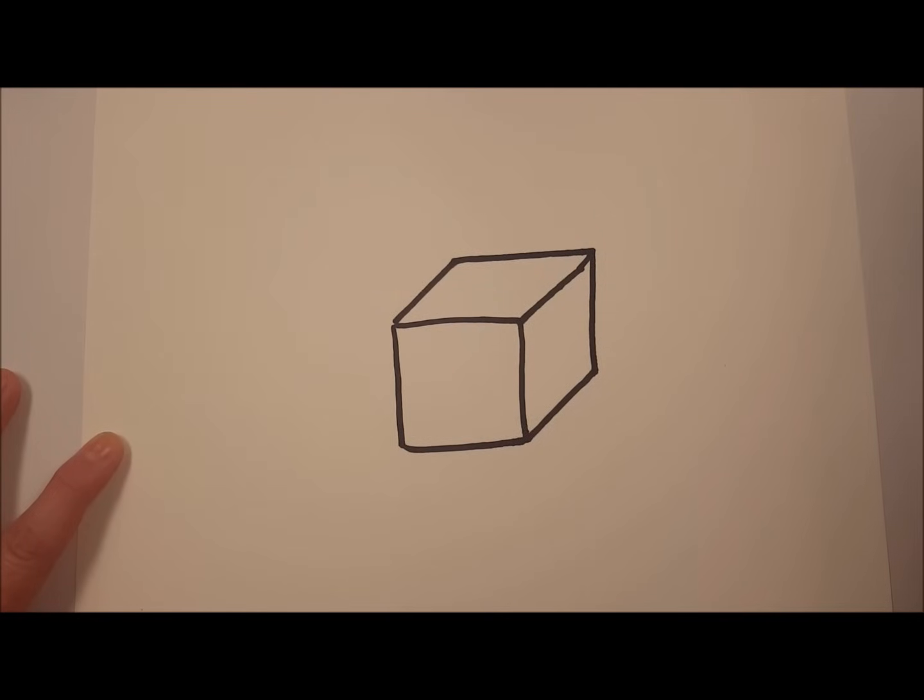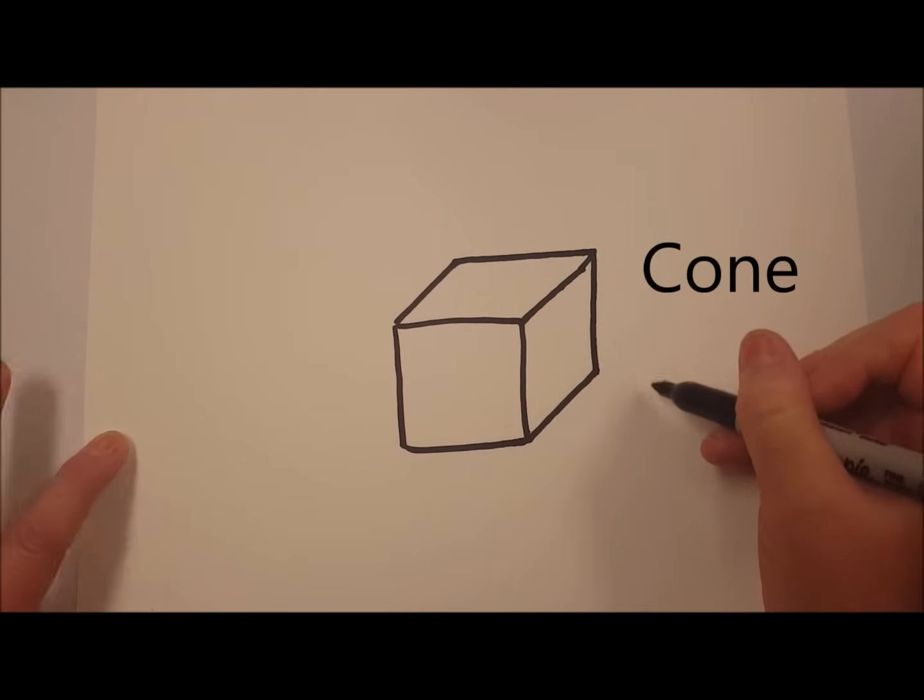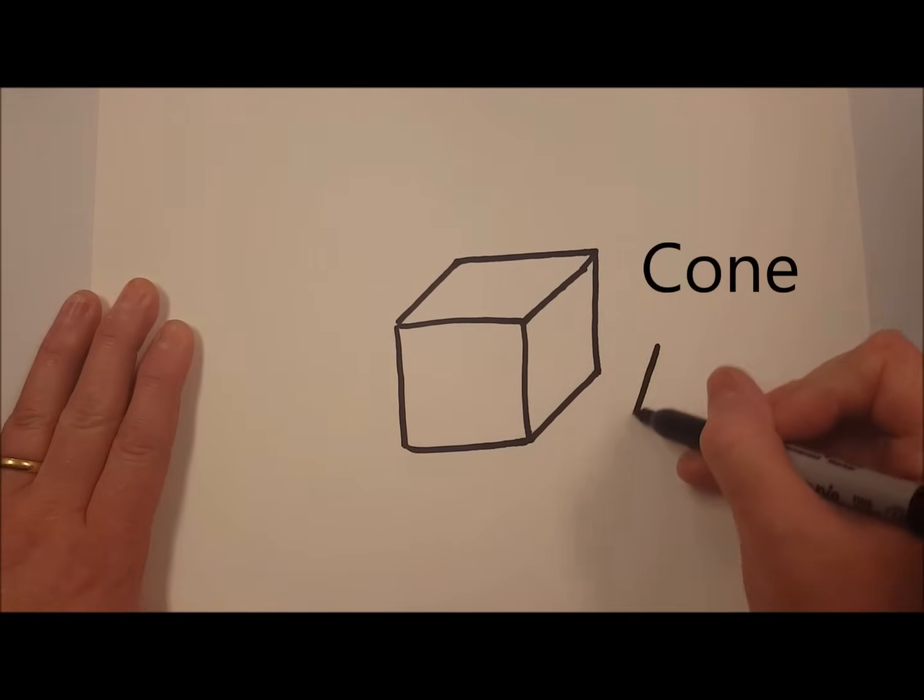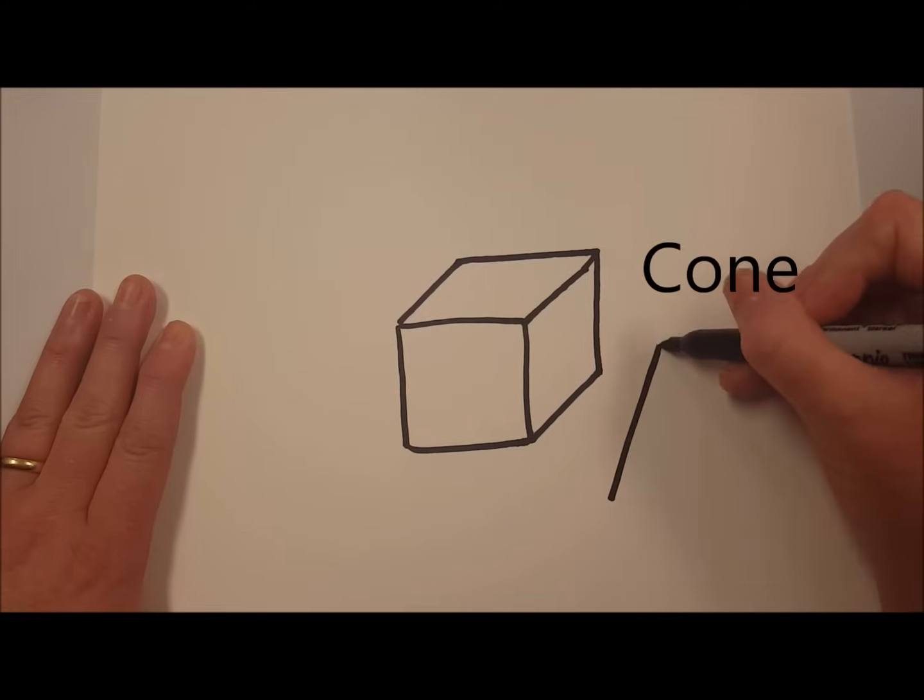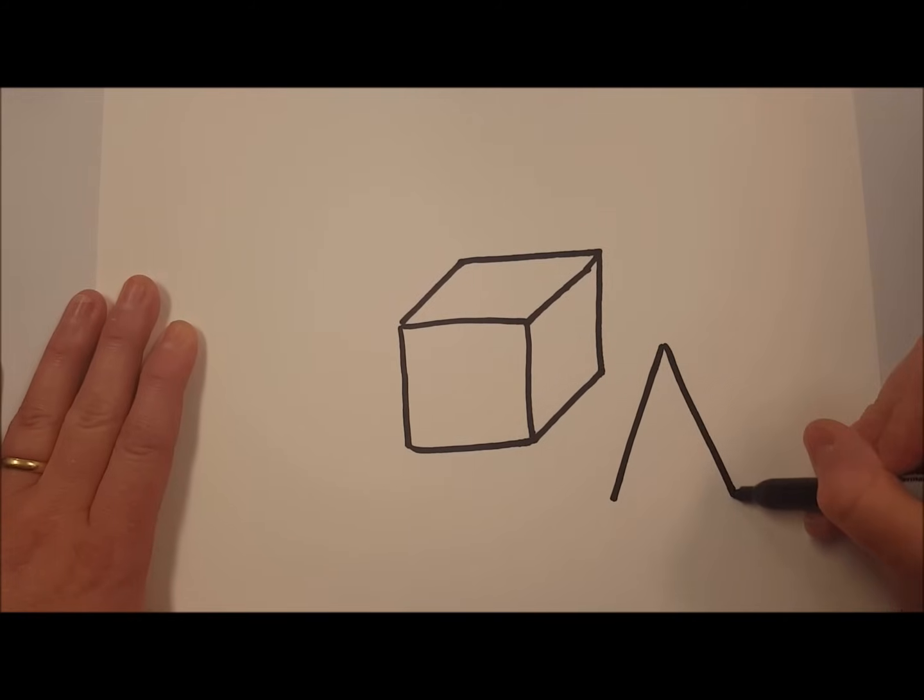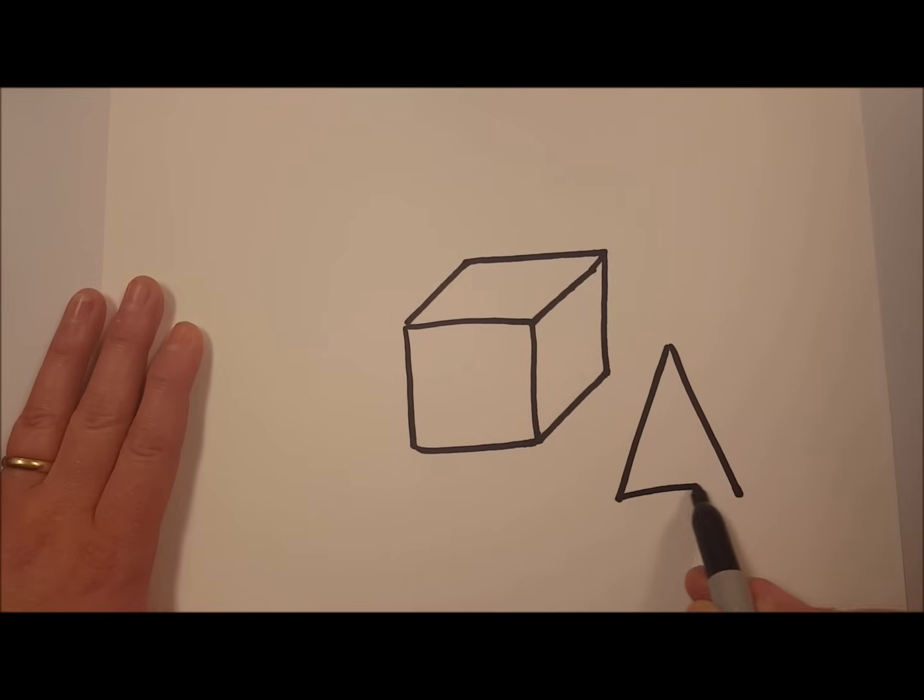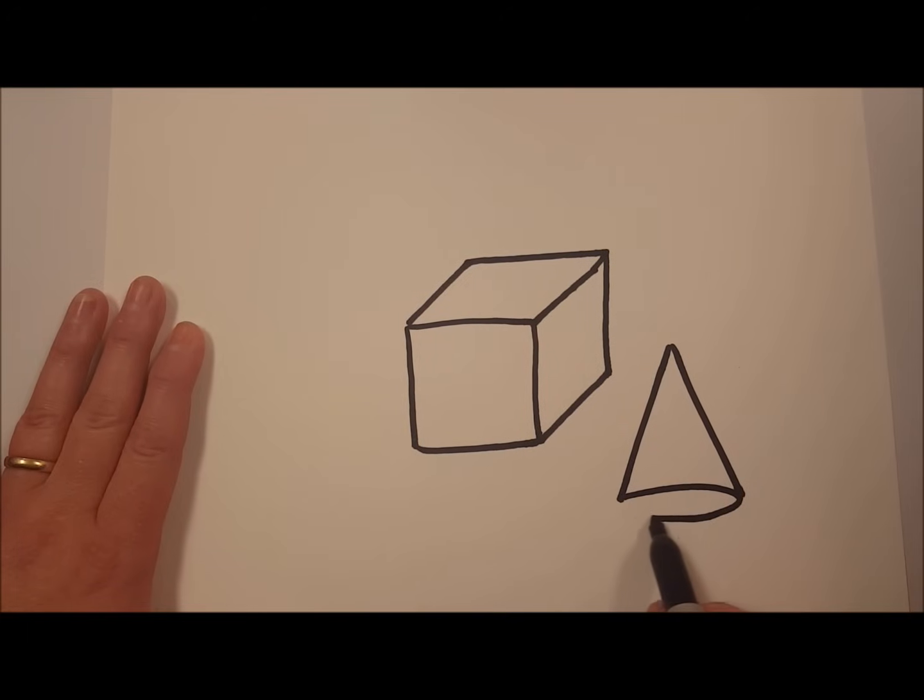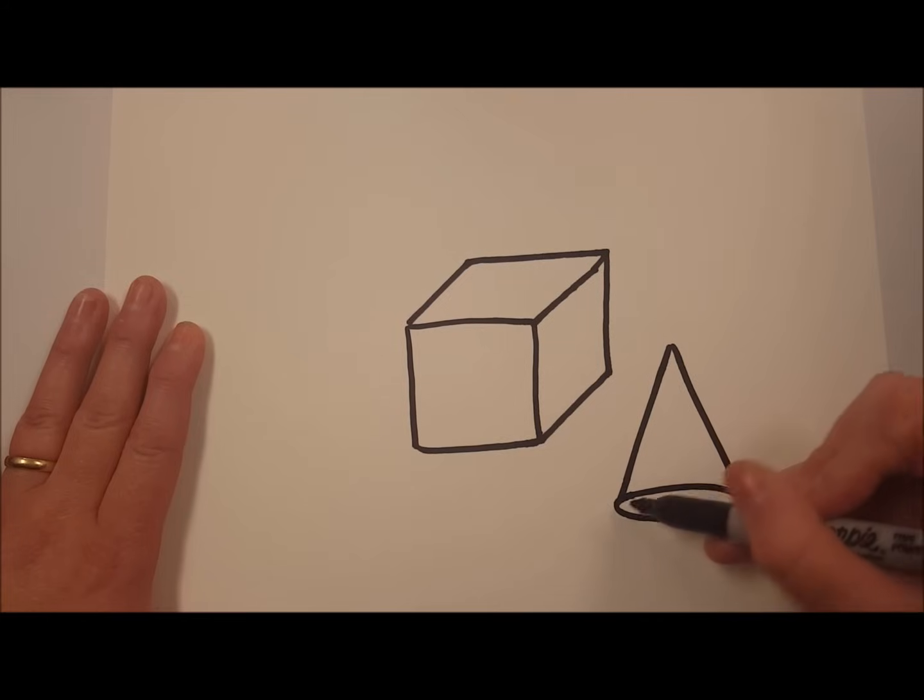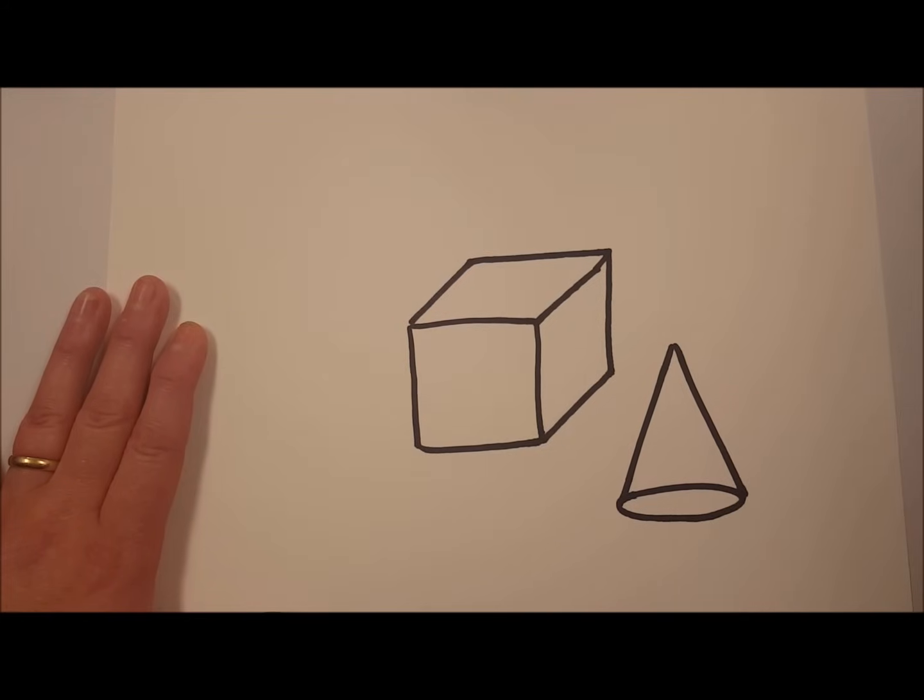Next, let's do a cone. A cone is a triangle that's rounded at the bottom, so we start with a triangle shape, which is a plane shape or a flat two-dimensional shape. And to make it into a three-dimensional shape, you add an oval at the bottom. Now let's do a pyramid.